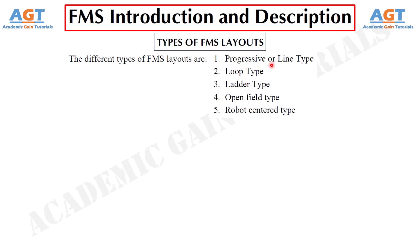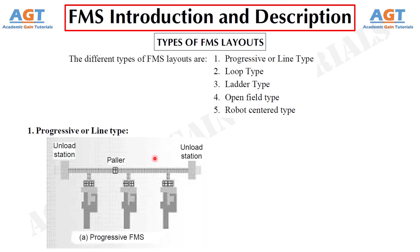In the progressive or line type FMS layout, the machines and handling system are arranged in a line as shown in figure A. It is most appropriate for a system in which parts progress from one workstation to the next in a well-defined sequence with no backflow. The operation of this type of system is very similar to a transfer type. Work always flows in a unidirectional path.